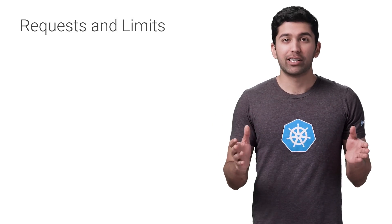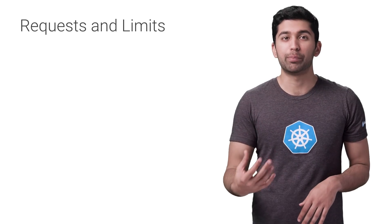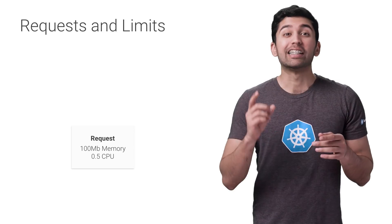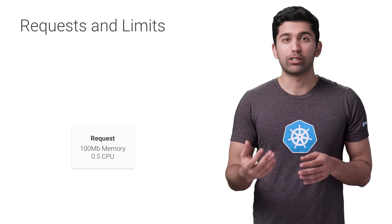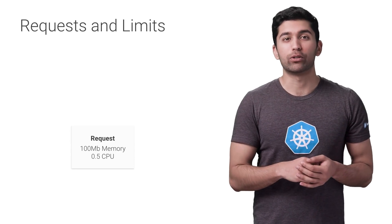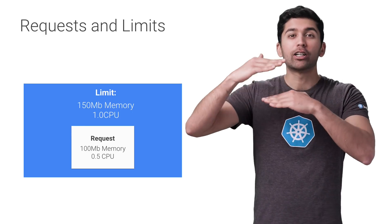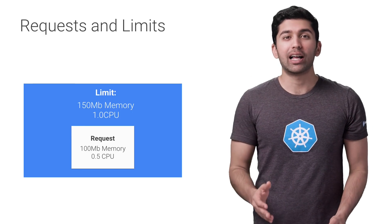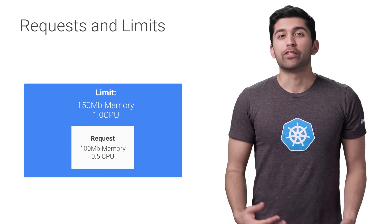Requests and limits are the mechanisms Kubernetes uses to control resources such as CPU and memory. Requests are what the container is guaranteed to get. If a container requests a resource, Kubernetes will only schedule it on a node that can give it that resource. Limits, on the other hand, make sure a container never goes above a value — the container is only allowed to go up to the limit, and then it's restricted.